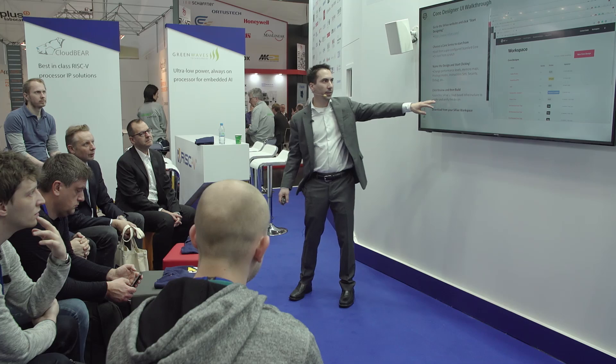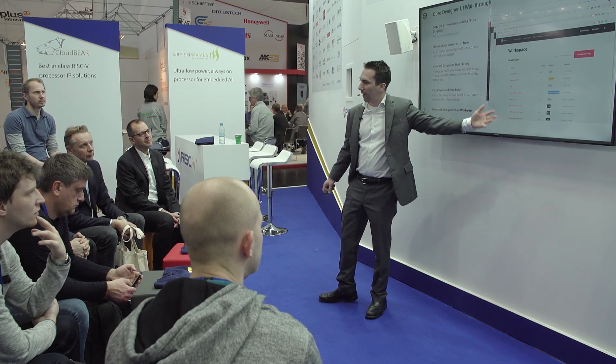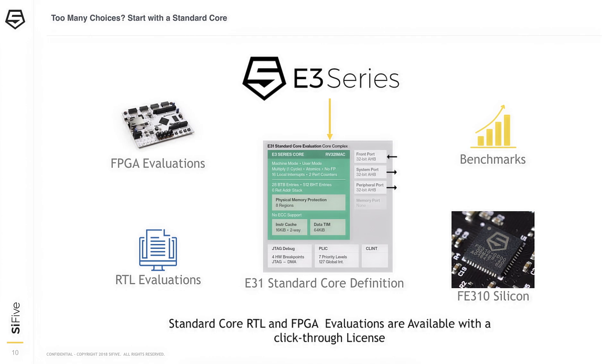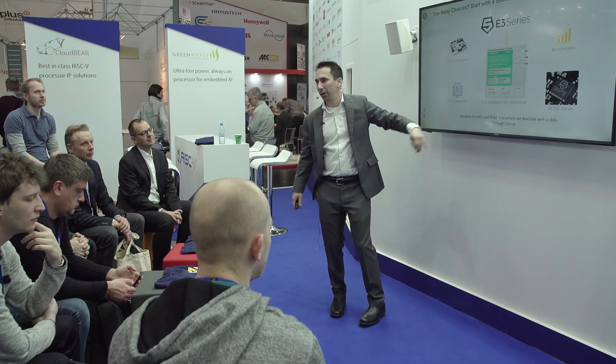After you've made your design, you click Review and Build, which takes you to your workspace where you can see all the cores you've built and download deliverables. If the configuration space feels overwhelming, you can start from a standard core — that's one reason we made them. We pre-configure a series like the E3 and name it as a standard core, used for benchmarking. These cores have also been put into silicon — our dev boards like the HiFive1 and HiFive Unleashed are silicon implementations of standard cores, available as FPGA and RTL evaluations without needing Core Designer.